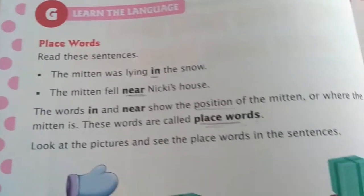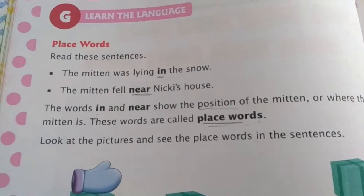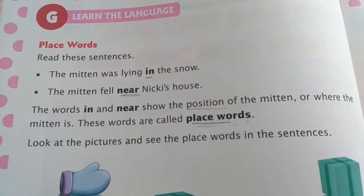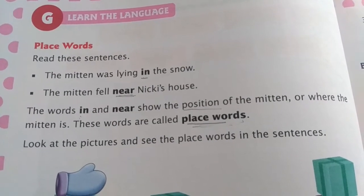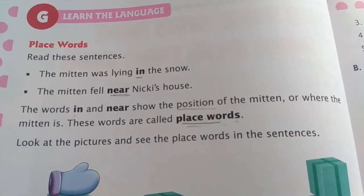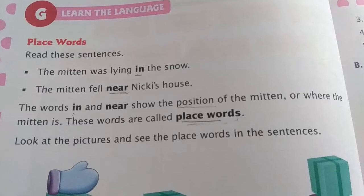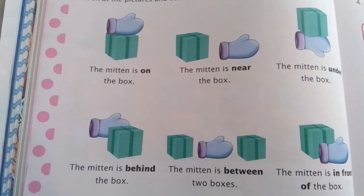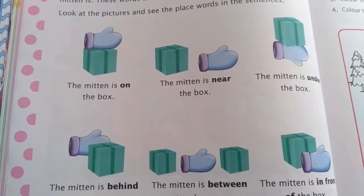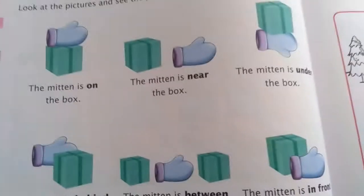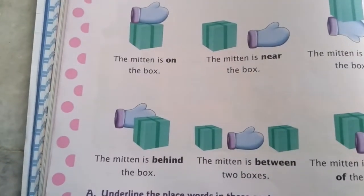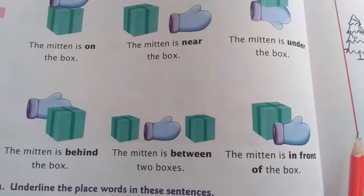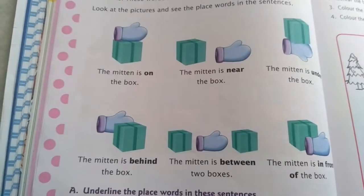Place words tell us about the position of something — where a particular thing is placed. For example: the mitten is on the box — on top of the box. The mitten is near the box — beside the box. The mitten is under the box — below the box. The mitten is behind the box — behind means piche. The mitten is between two boxes — in the center of two boxes. The mitten is in front of the box — in front means aage. These are some place words given to us.